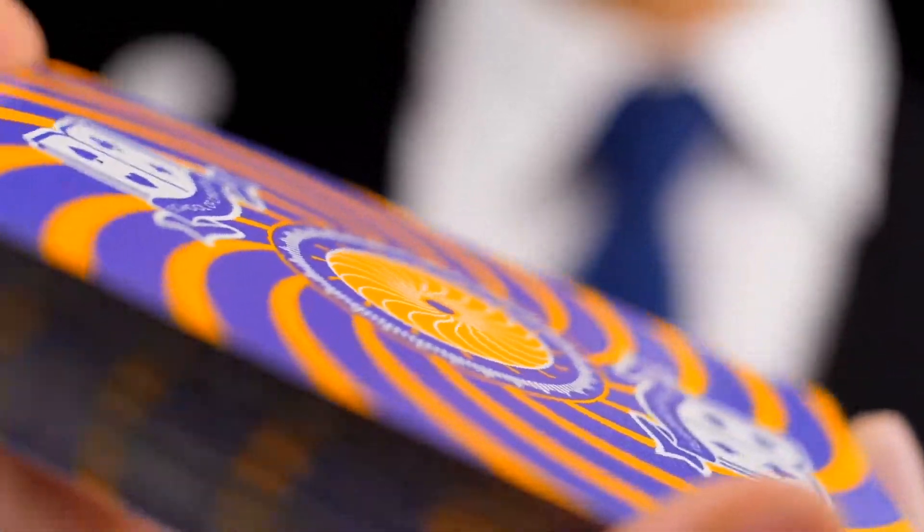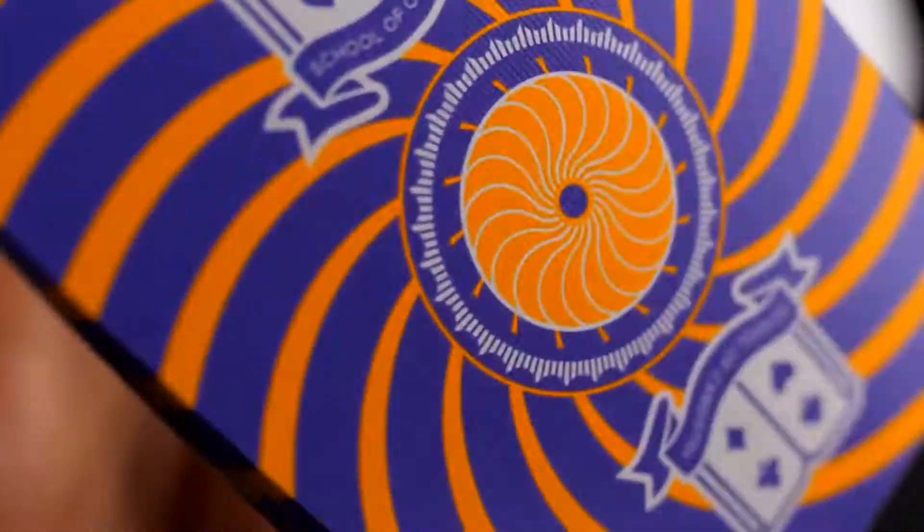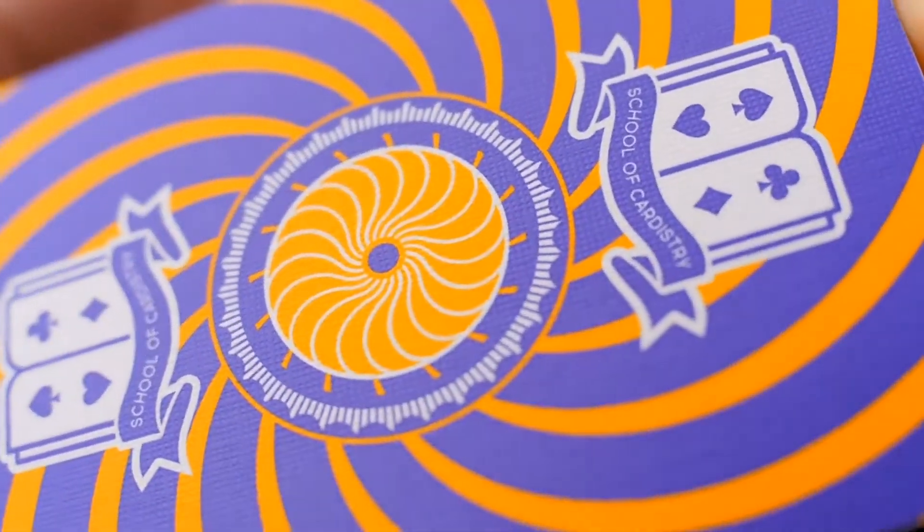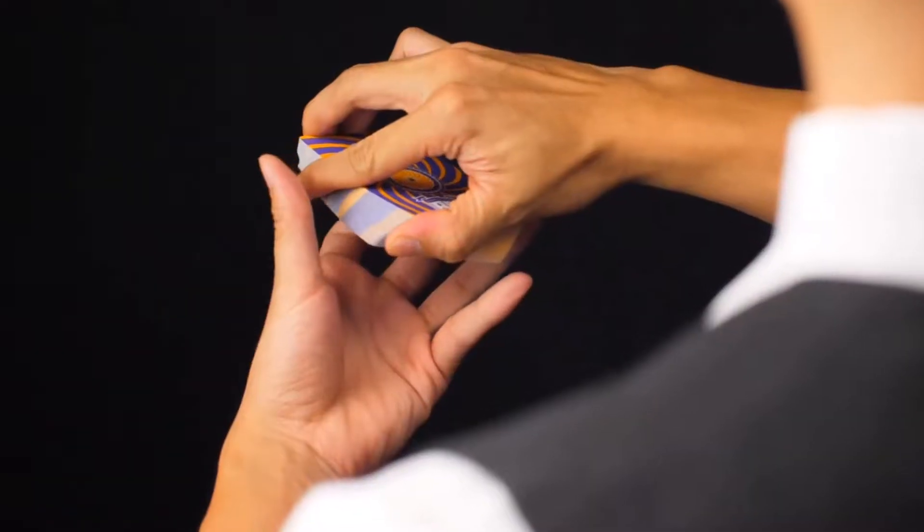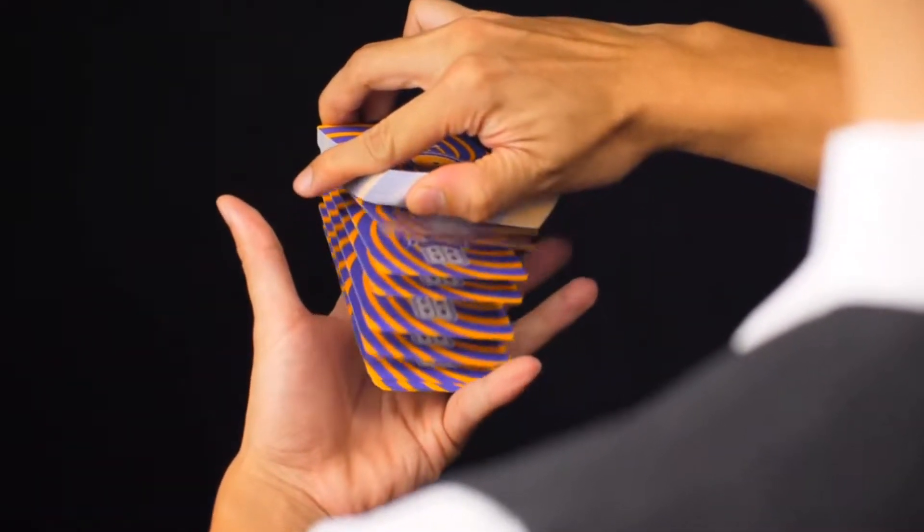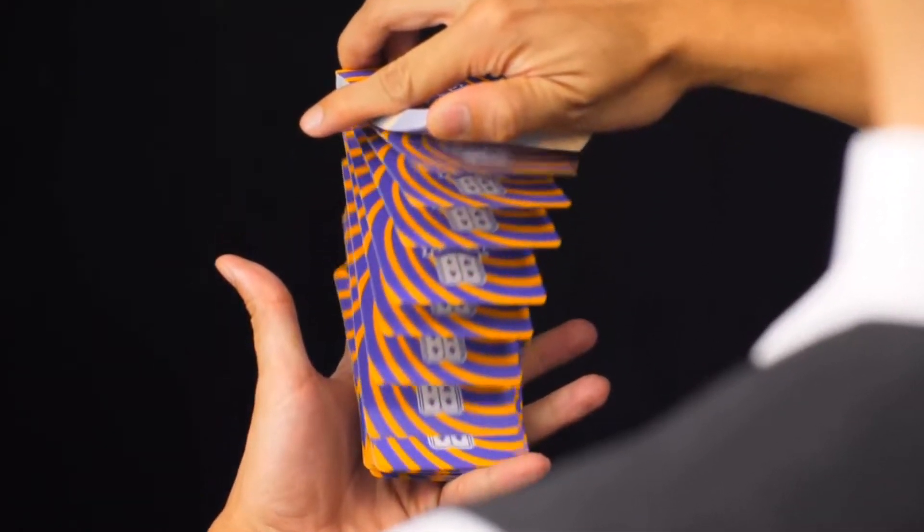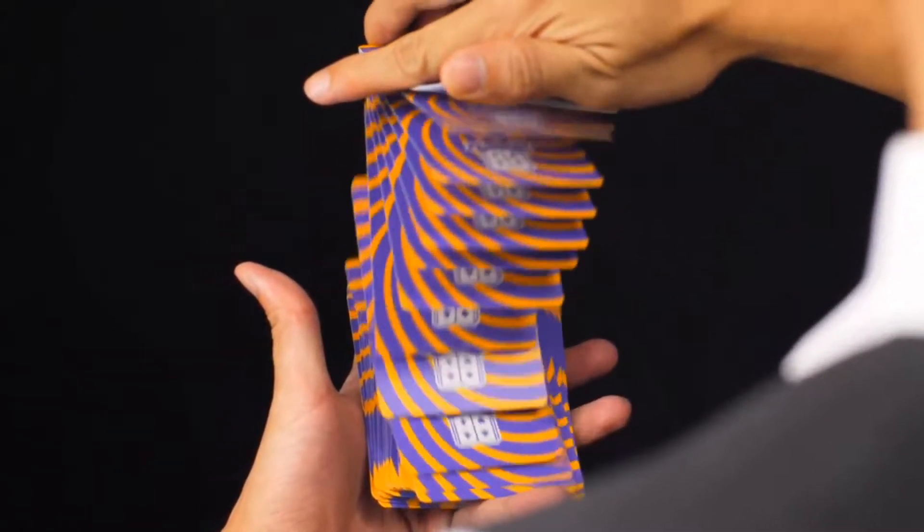The recurring lines created by the spirals on the backs of the cards create the ultimate performance piece. Even the smallest dribbles and springs gain the ability to create stunning effects in your audience's eyes.